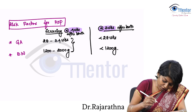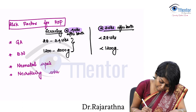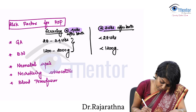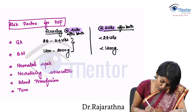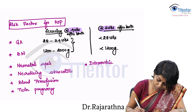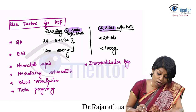Other risk factors for ROP include neonatal sepsis, necrotizing enterocolitis, history of blood transfusion, history of twin pregnancy, and intraventricular hemorrhage. A thorough history is very important to assess the risk of ROP.